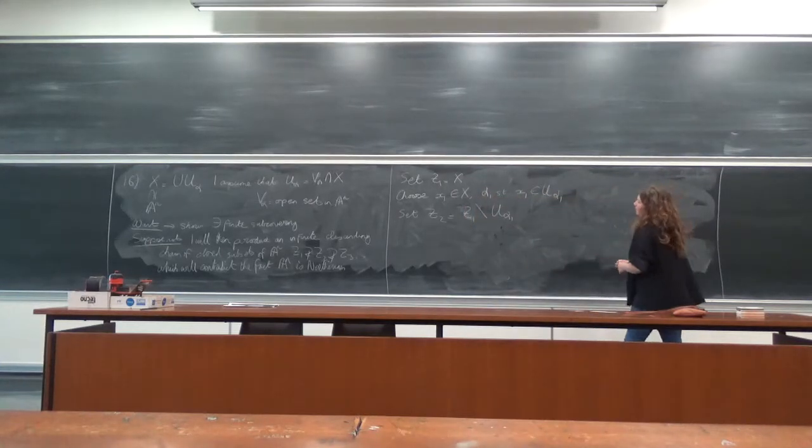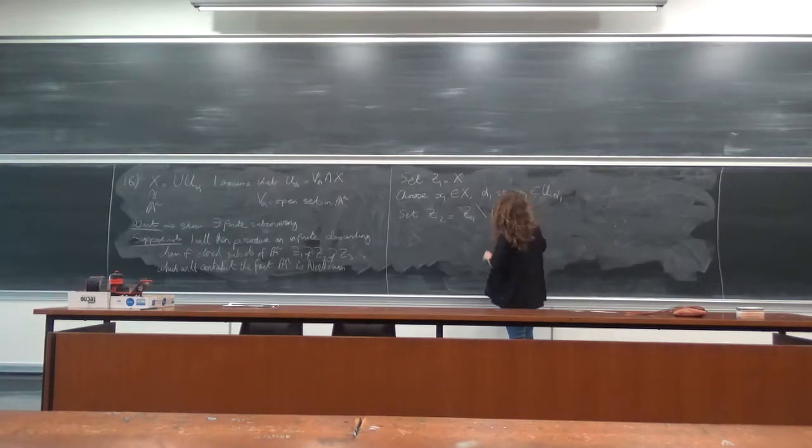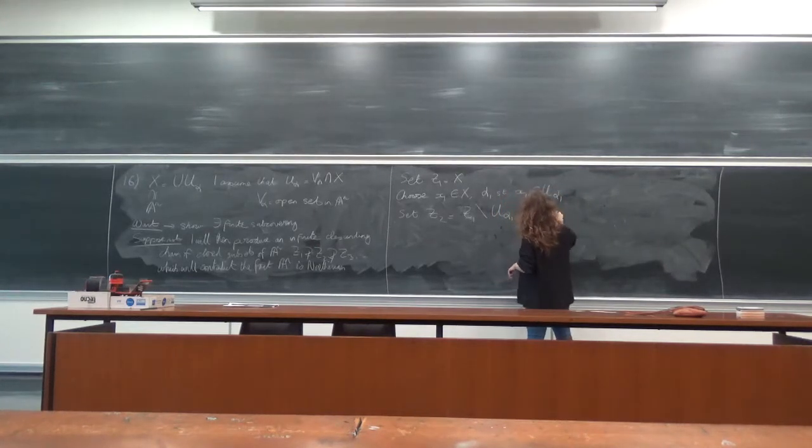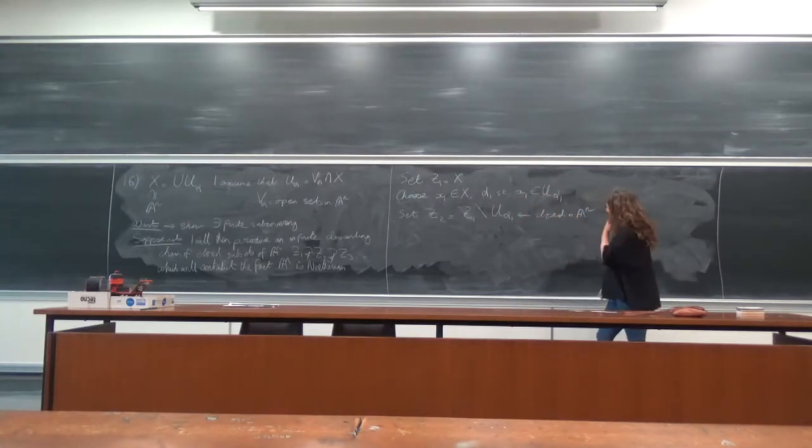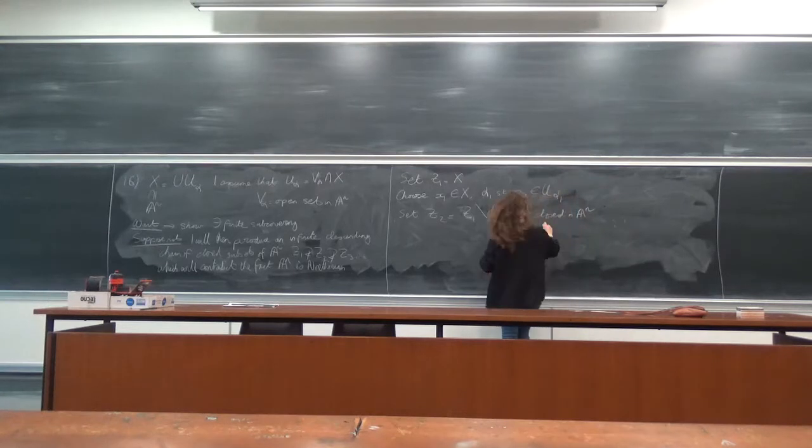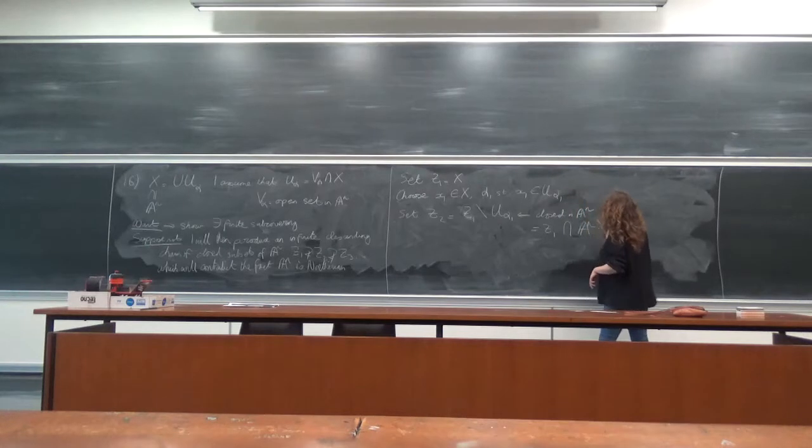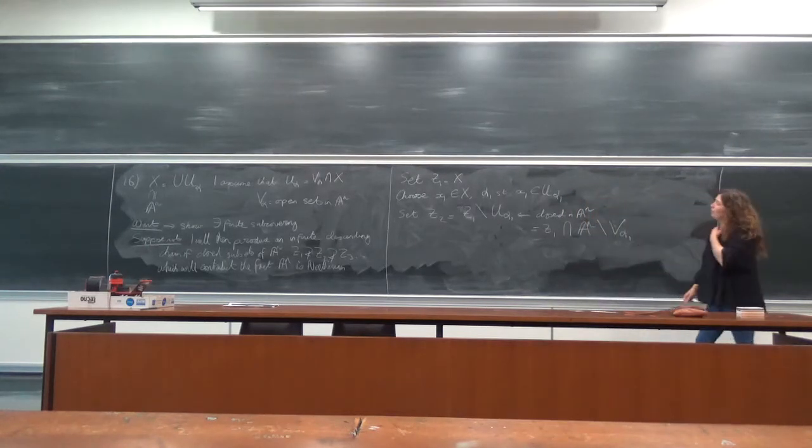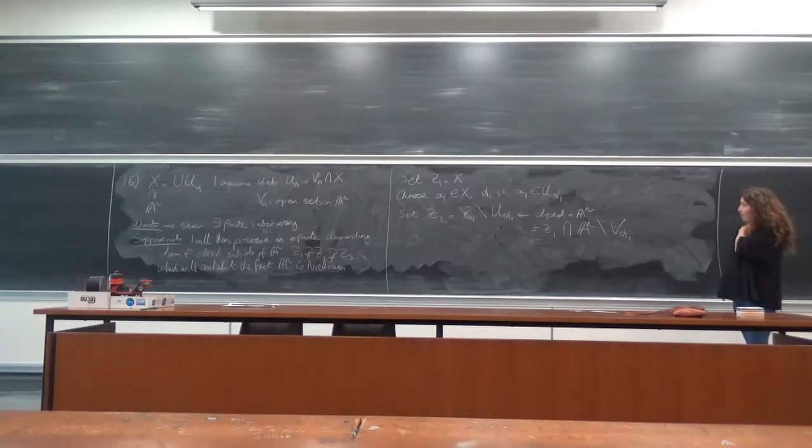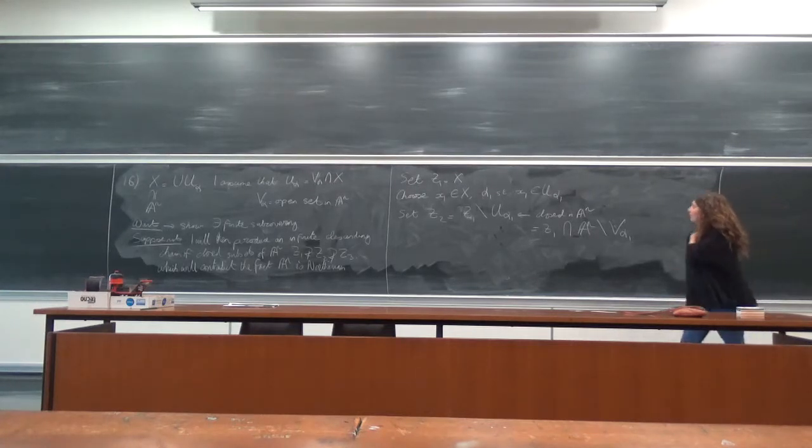x1 is contained in U_alpha1, so I know that this is also closed in A^n, since it's equal to Z1, which is closed, intersection A^n set minus U_alpha1.